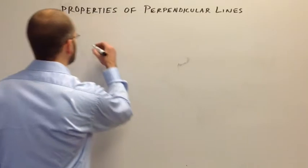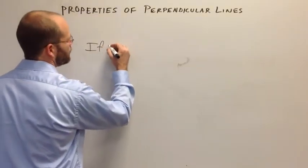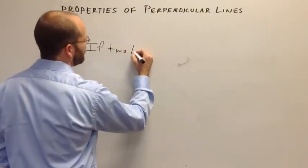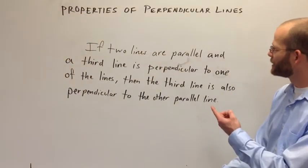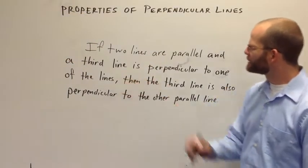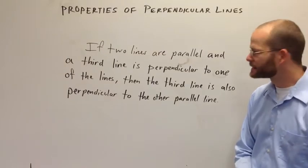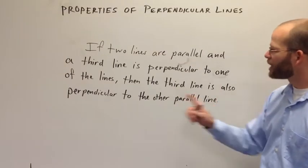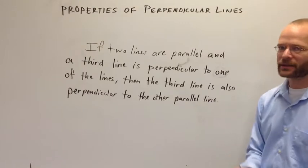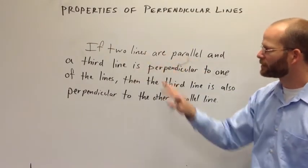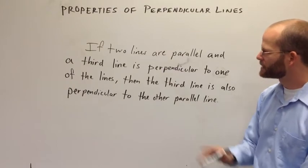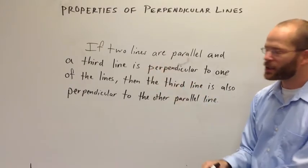So the first theorem says, it says that if two lines are parallel and a third line is perpendicular to one of the lines, then the third line is also perpendicular to the other parallel line. Now I want to just talk about the structure of this theorem for a moment, because it's important to look at it and figure out what's going on here. I have an if-then statement.